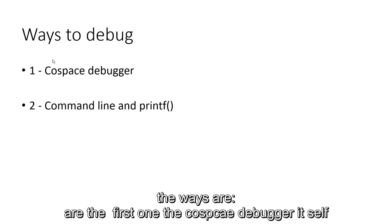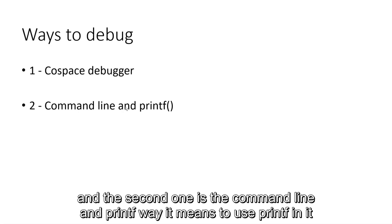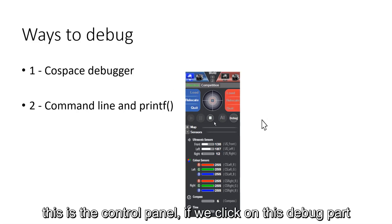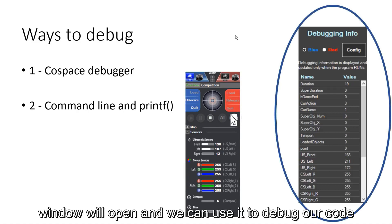We have two ways to debug in the Corespace simulation. The ways are one, the first one is the Corespace debugger itself and the second one is the command line and printf way, which we use printf in it. This is the control panel. If we click on this debug part, a window will open, and we can use it to debug our code.